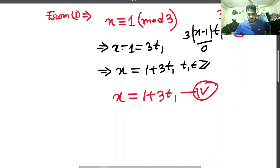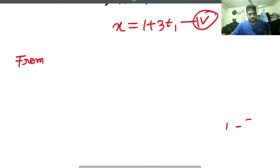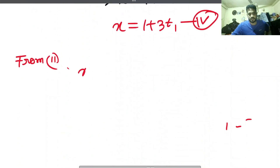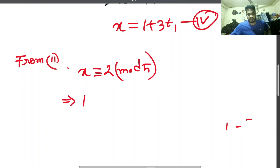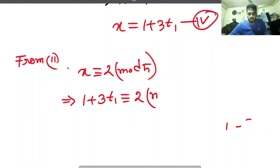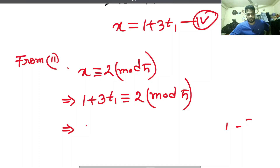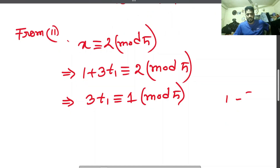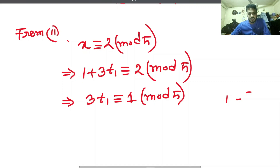From equation two, equation two was x congruent to 2 mod 5. We input the x value — x equals one plus 3t1 — into equation two: one plus 3t1 congruent to 2 mod 5. Then, moving one over: 3t1 congruent to 1 mod 5.